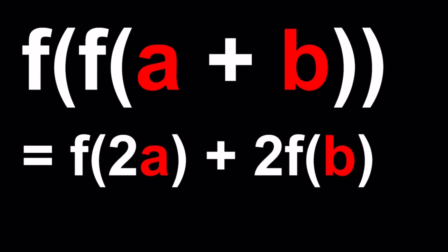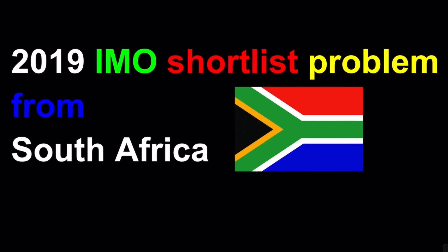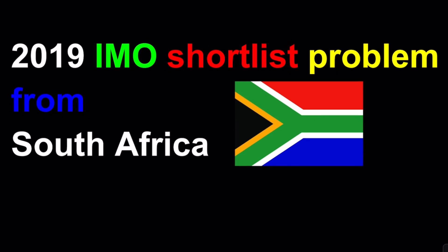Hello everyone. In this video, we're going to be solving a very nice functional equation. So a and b are integers. From the set of integers to the set of integers, we have a function f such that f of f of a plus b equals f of 2a plus 2 times f of b. And we're going to try to solve for f. Now this problem is actually an IMO shortlist problem proposed by South Africa in 2019. So let's go ahead and take a look.